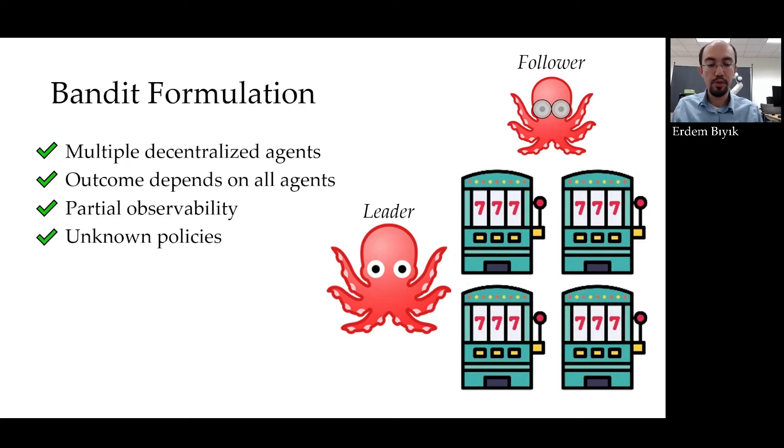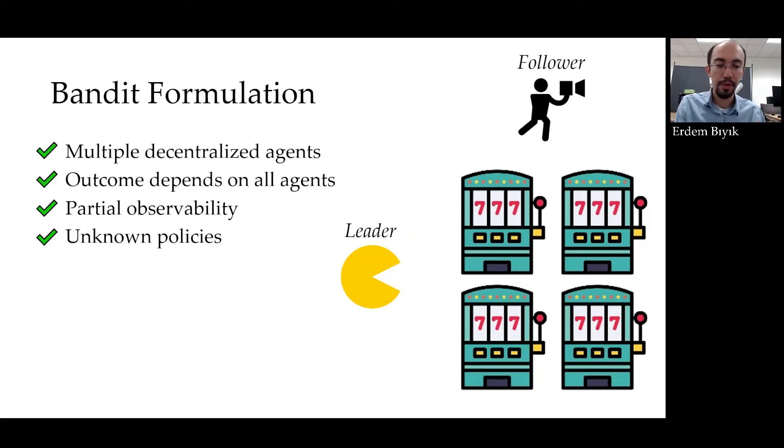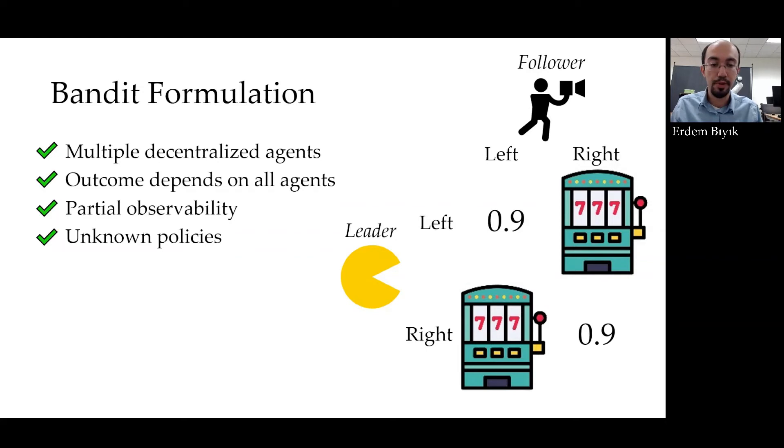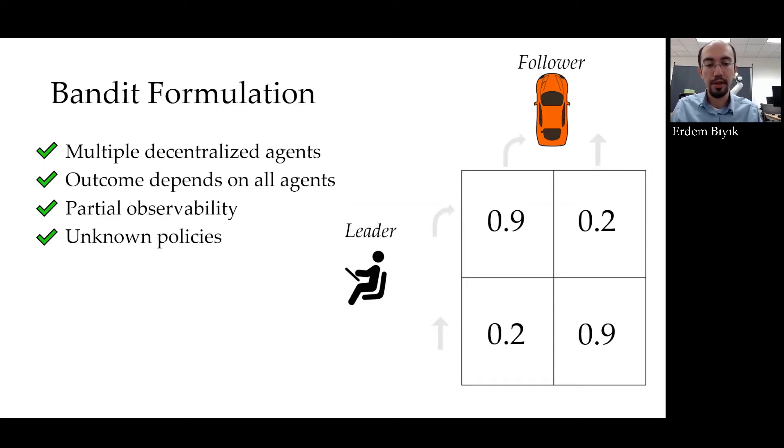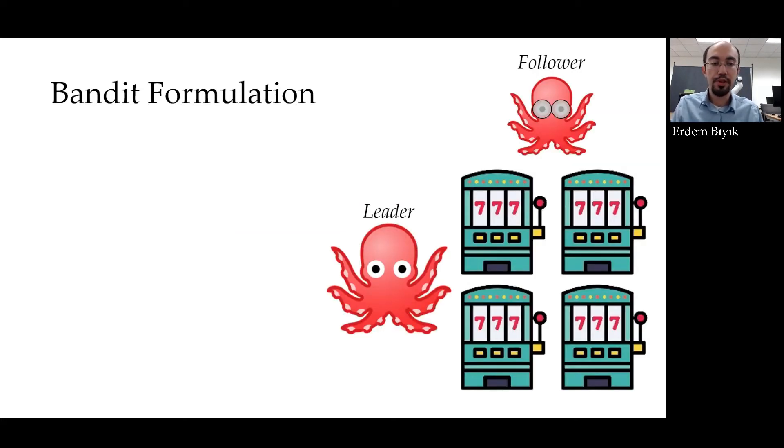For example, in the Pac-Man video, the leader would be the Pac-Man actor, and the follower would be the cameraman. Their actions are to go either left or right. If they both go in the same direction, that's good, they will achieve their goal and probably have a funny footage, let's say with 90% probability. But if they go opposite directions, then it's unlikely that they will have a useful video. Or we can formulate the driving example in the framework. Here, the leader would be the driver, and the follower would be the autonomy. They had three possible actions, but let's ignore one of them for brevity, and again, their actions will jointly determine the probability of success. Here, as opposed to the human-human teams, the autonomy really has partial observability. So, it really fits into our generic formulation with the octopuses.